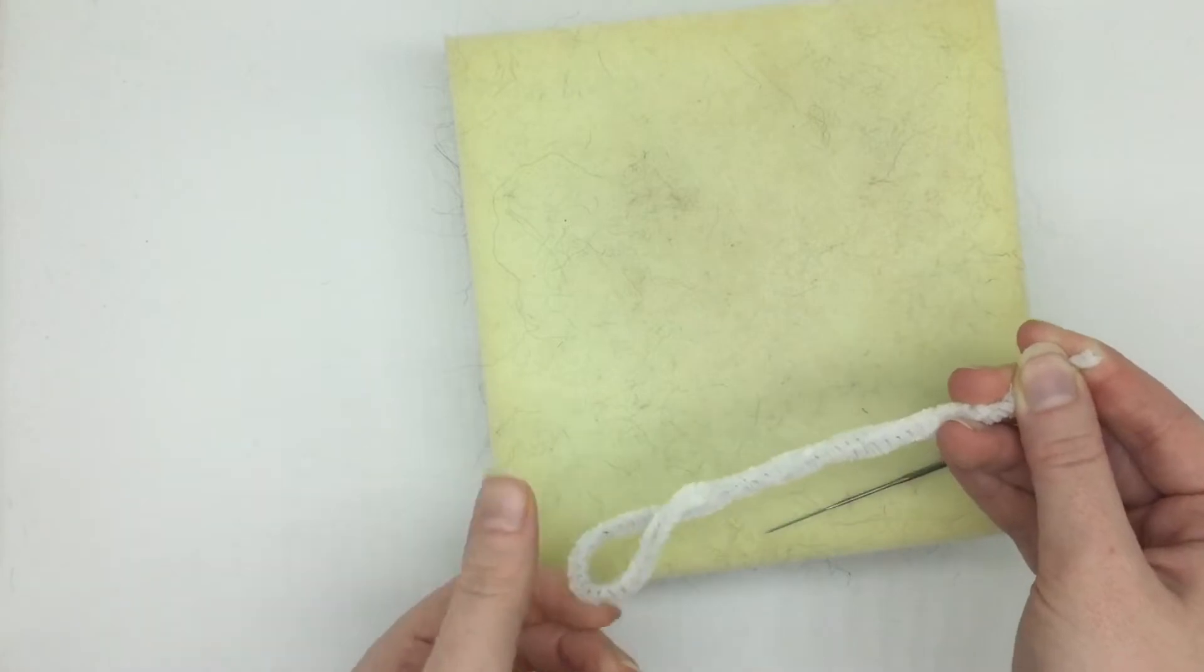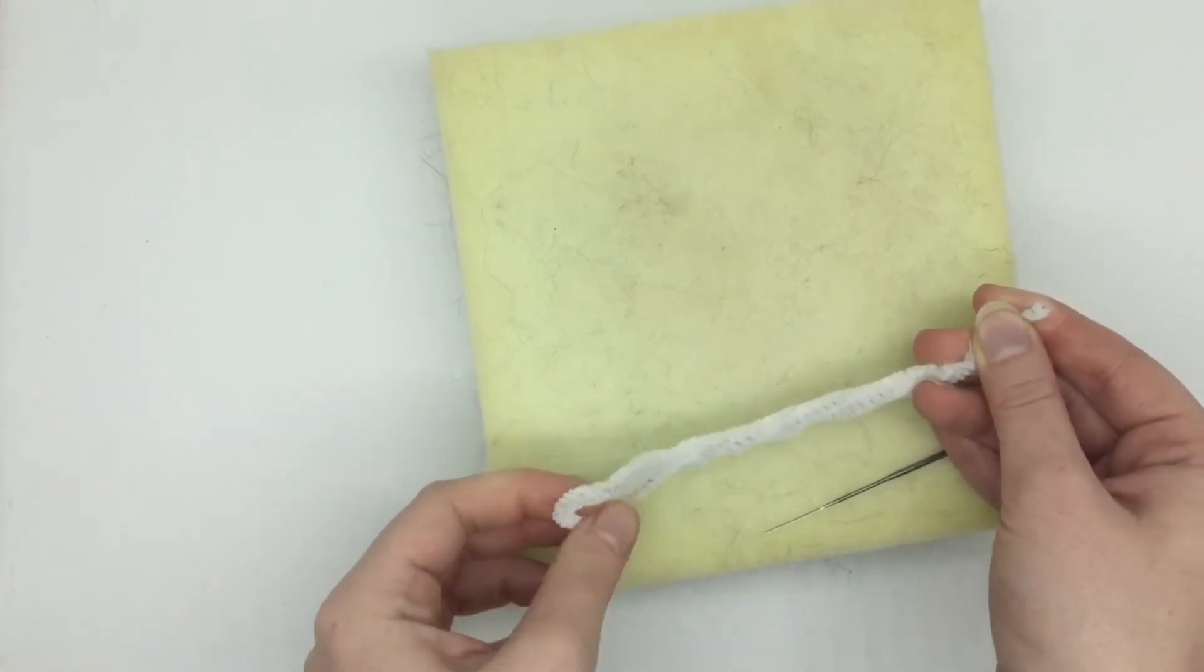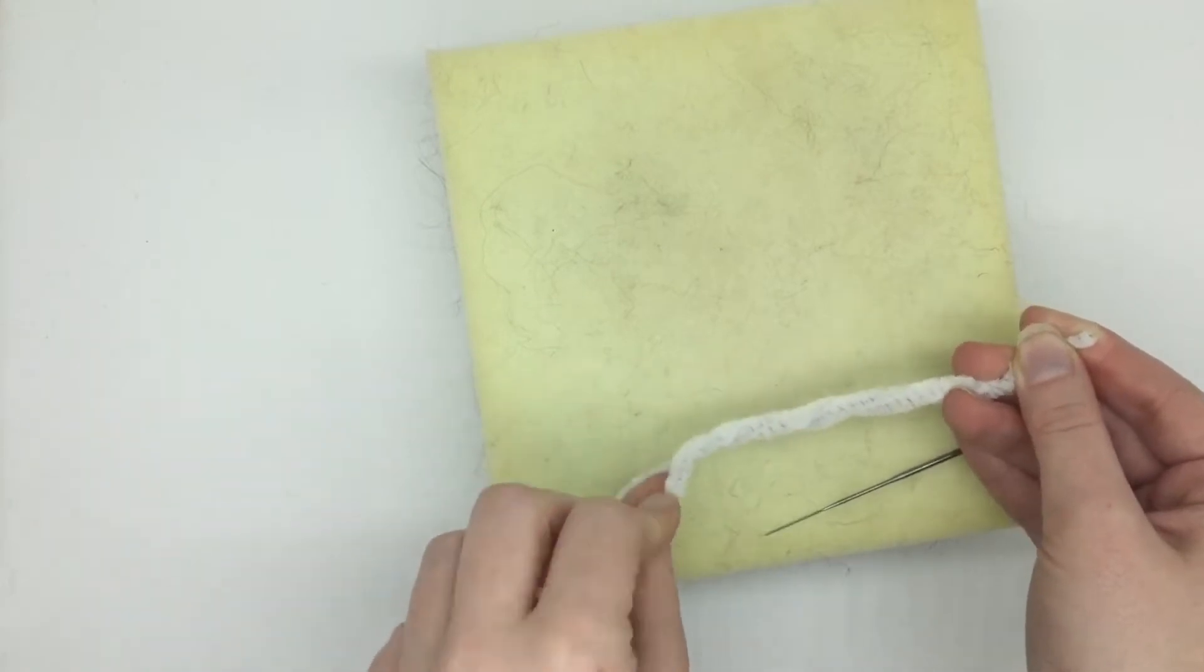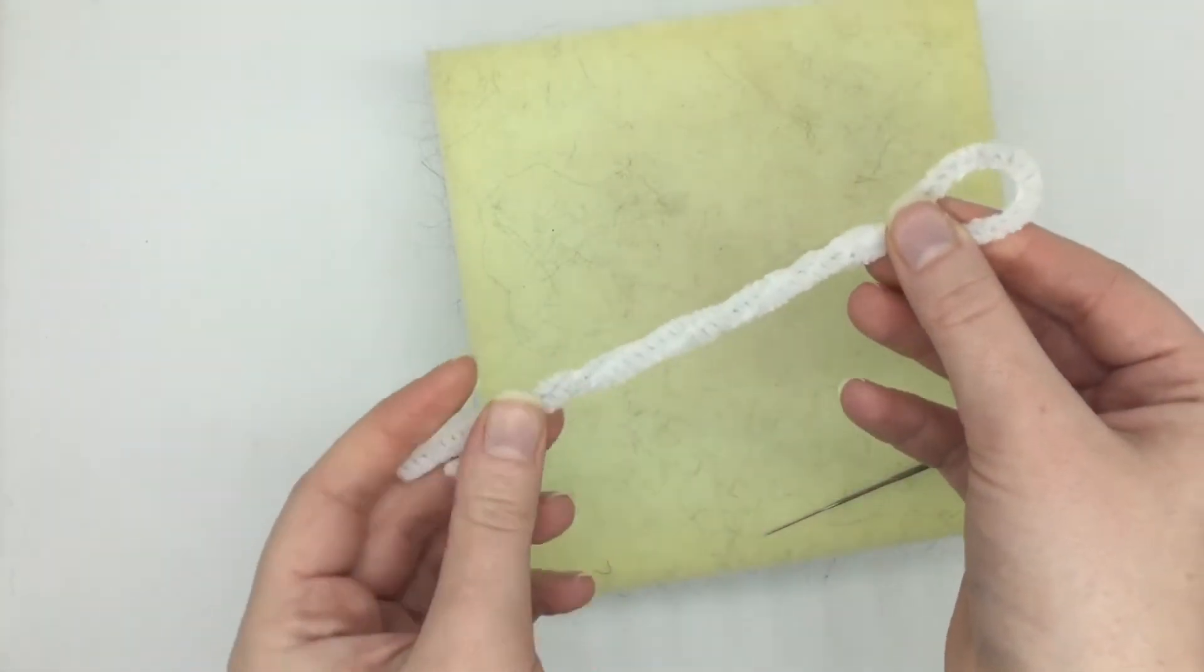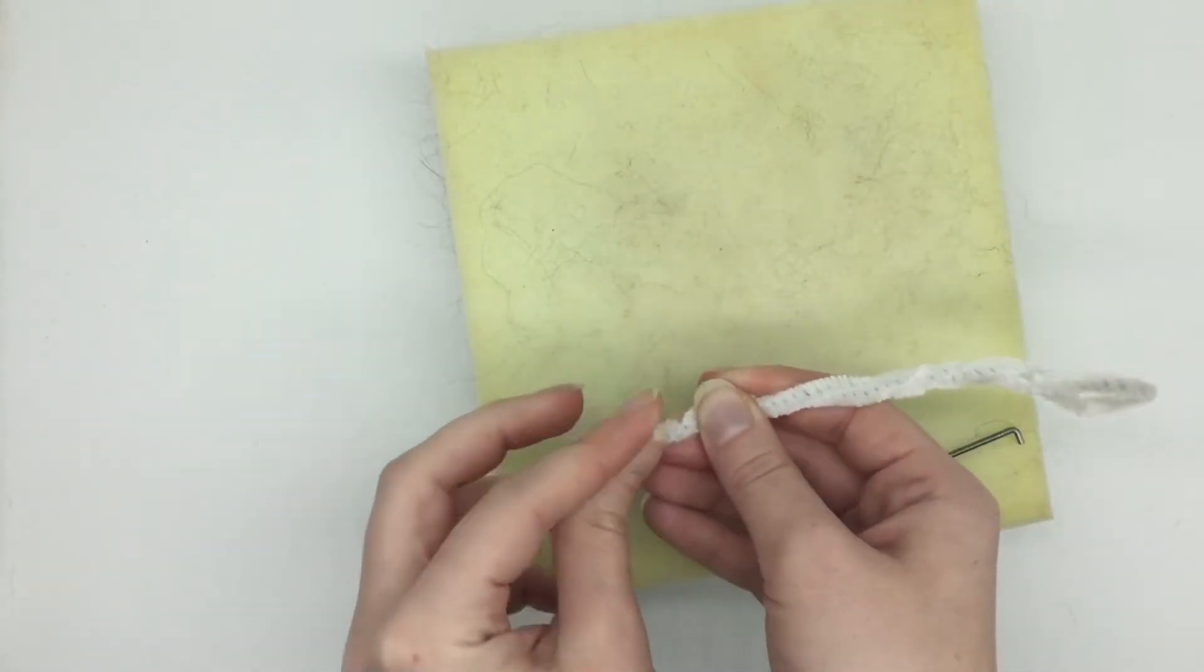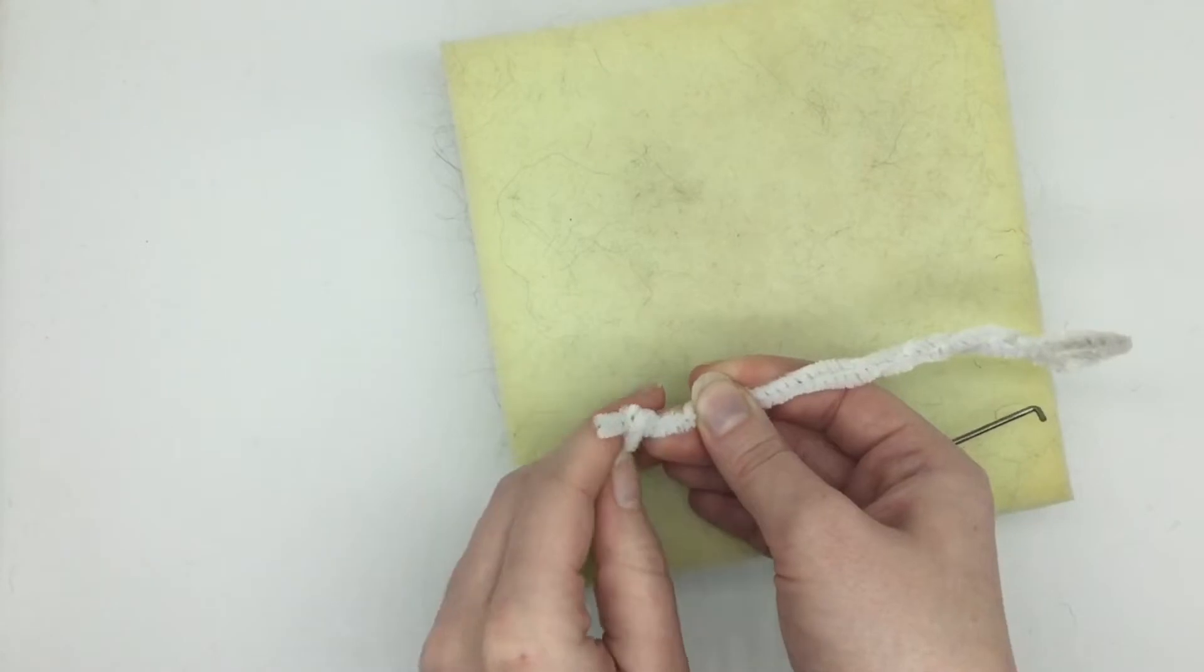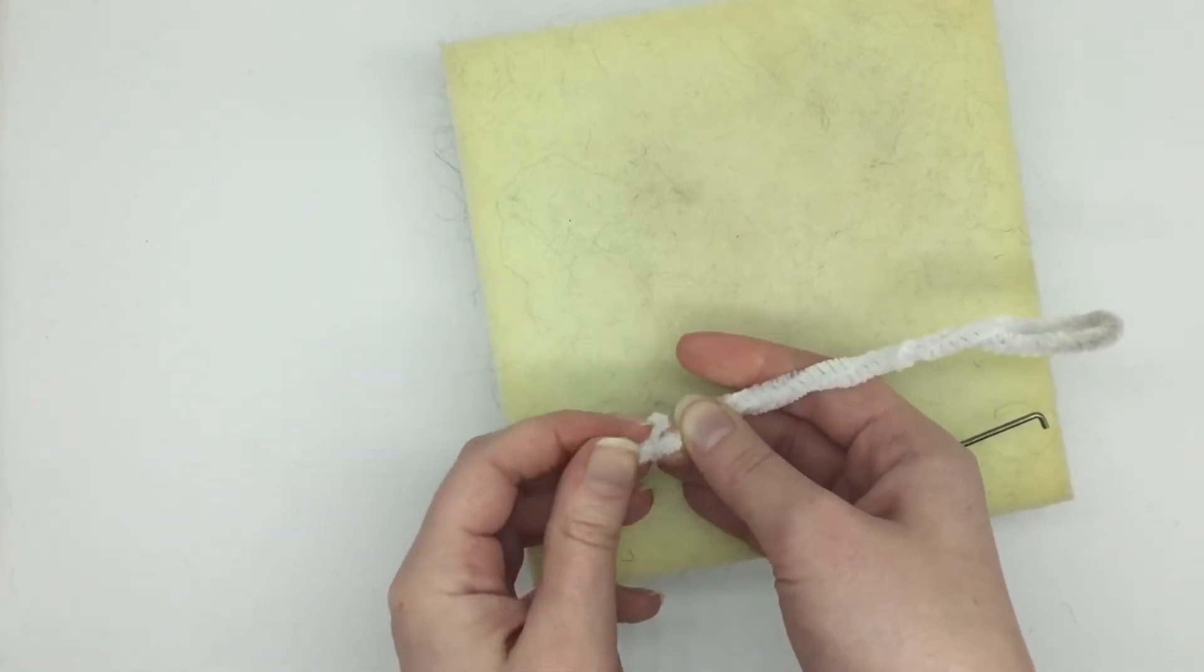As you can see here, I've just got that loop at the top and the rest of the pipe cleaner that is twisted is going to make the stem of the rose. Then I'm just going to make sure those end bits are just folded over because sometimes they can be sharp, so we don't want that sticking out the bottom at all.